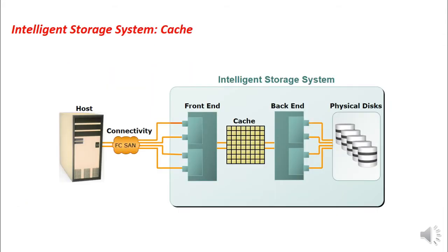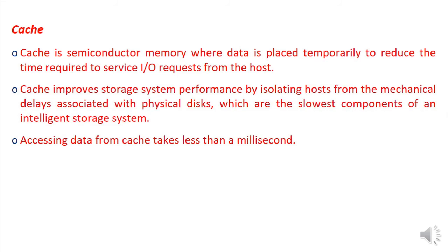The next important component is the cache. Cache is a semiconductor memory where data is placed temporarily to reduce the time required to service IO requests from the host. Cache improves storage system performance by isolating hosts from the mechanical delays associated with physical disks, which are the slowest components of an Intelligent Storage System. Accessing data from cache takes less than a millisecond.